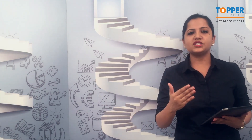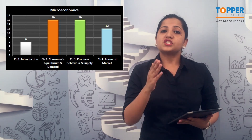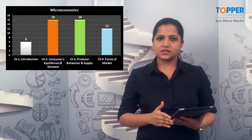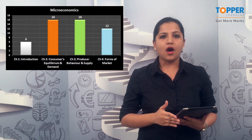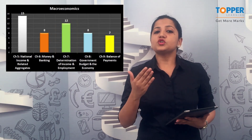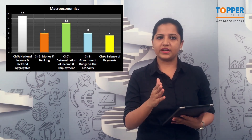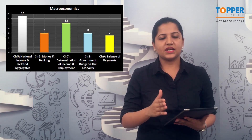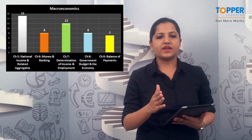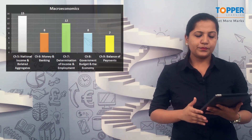Before proceeding, let's see the chapter-wise breakup of marks as prescribed by CBSE. Chapter 1 is allotted 6 marks. Chapters 2 and 3 are of 16 marks. Chapter 4 is of 12 marks. In macroeconomics, Chapter 5 is an essential chapter of 15 marks. Chapters 6 and 8 are of 8 marks, Chapter 7 is of 12 marks, and Chapter 9 is of 7 marks. With this, we have analyzed the marks distribution.